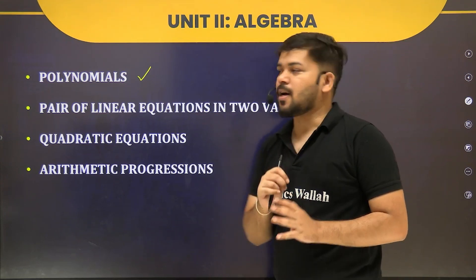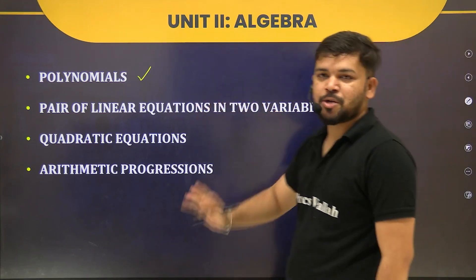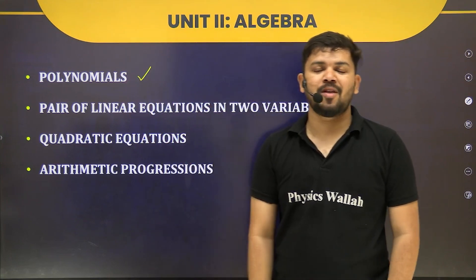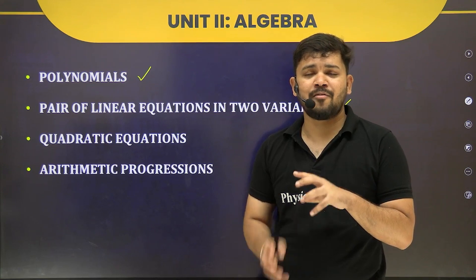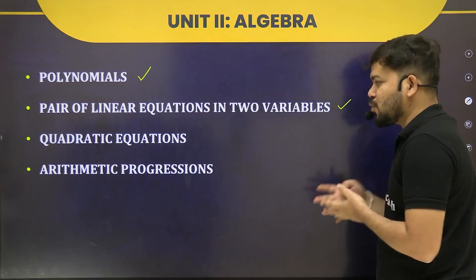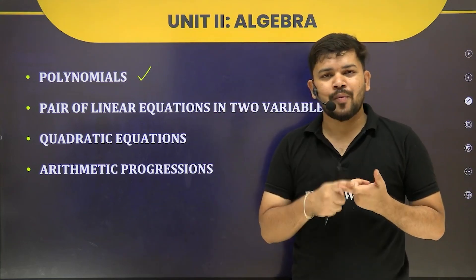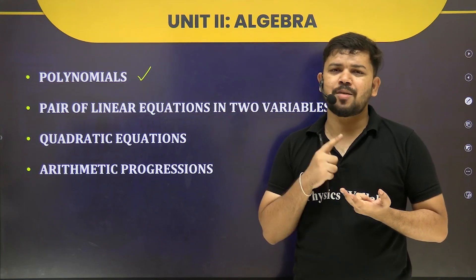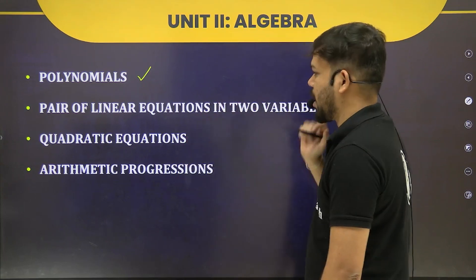Next is Pair of Linear Equations in Two Variables, which is a continuation of polynomials. A linear polynomial has degree one. We will see what linear equations in two variables mean, what the different solutions are, how to calculate solutions, and what unique solution, consistent, and inconsistent mean.